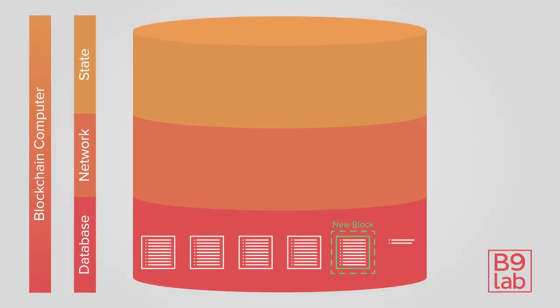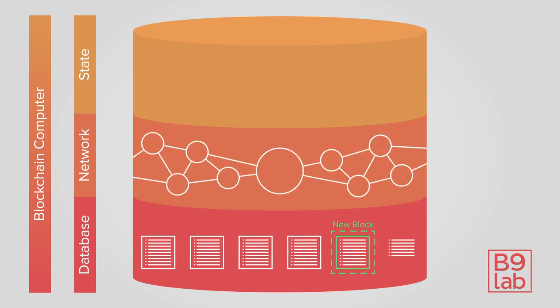A validator will eventually pick up our transaction and bundle it into a block. Every new block spreads through the network and is downloaded by every node.